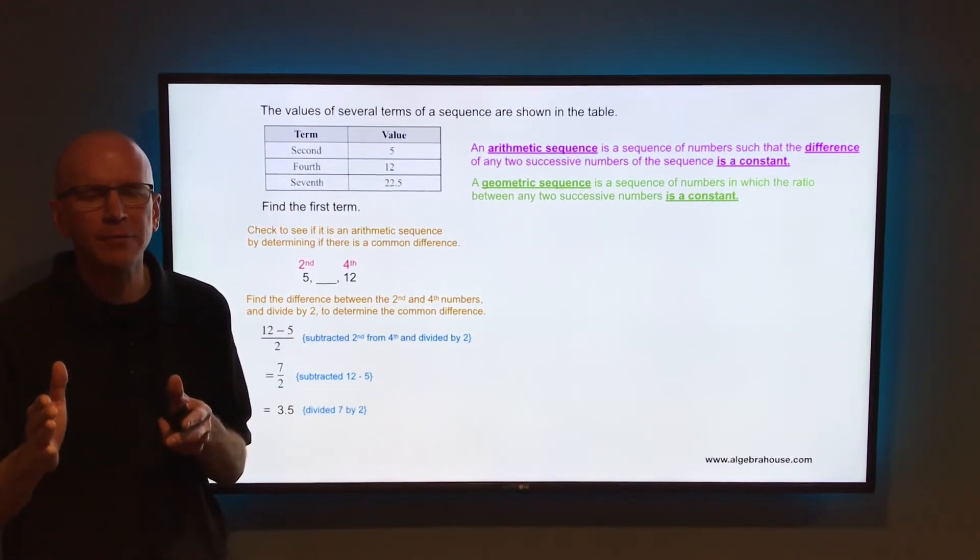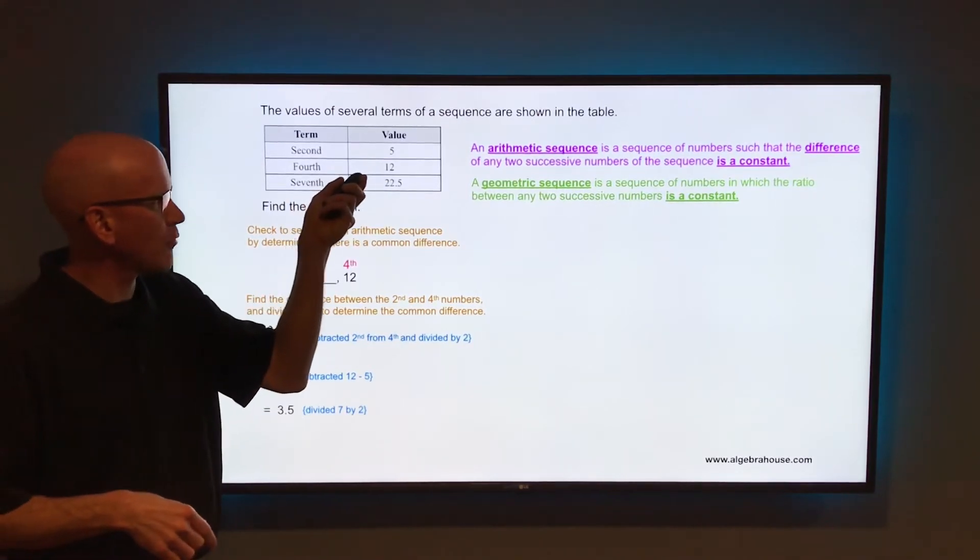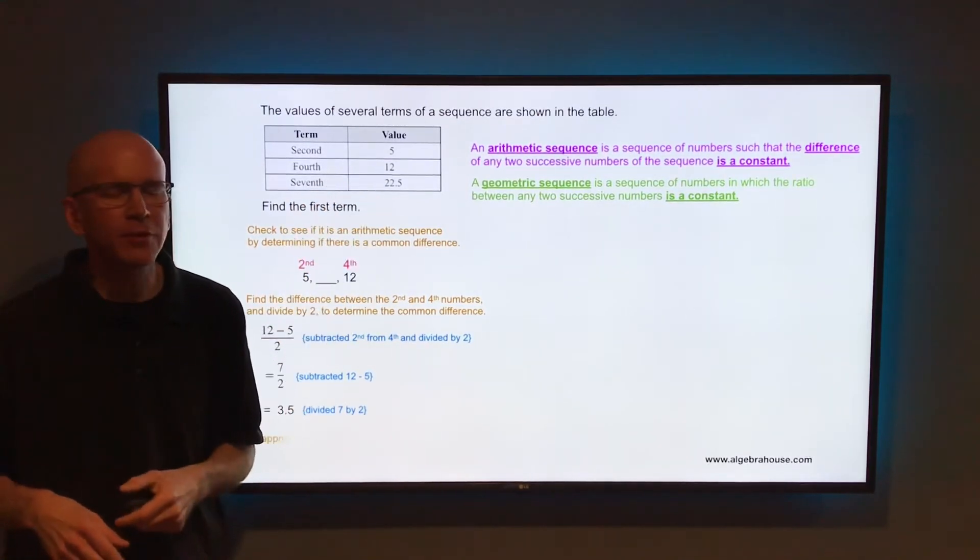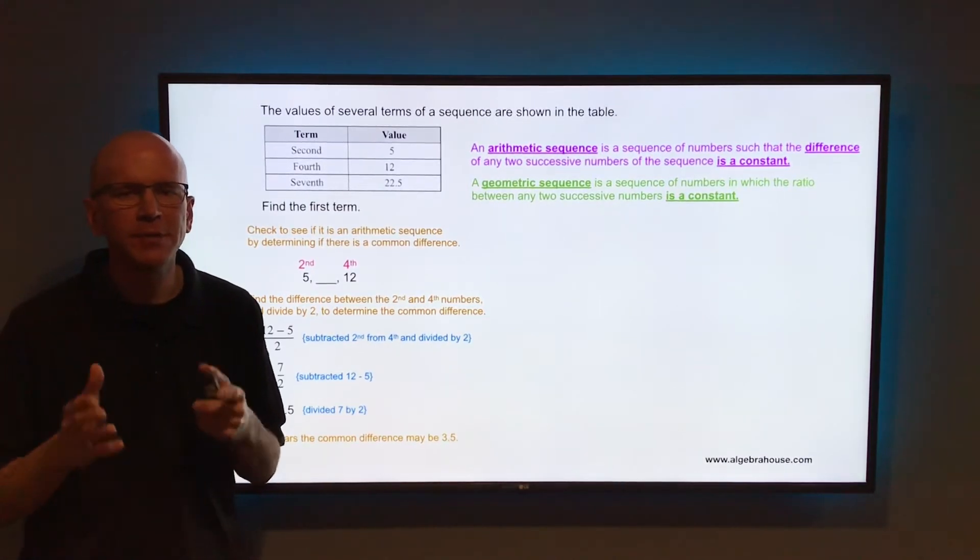So it appears the common difference is 3.5, but you can't be sure yet. We're going to go from that fourth term of 12 to that seventh term of 22.5 to verify that the common difference is 3.5.